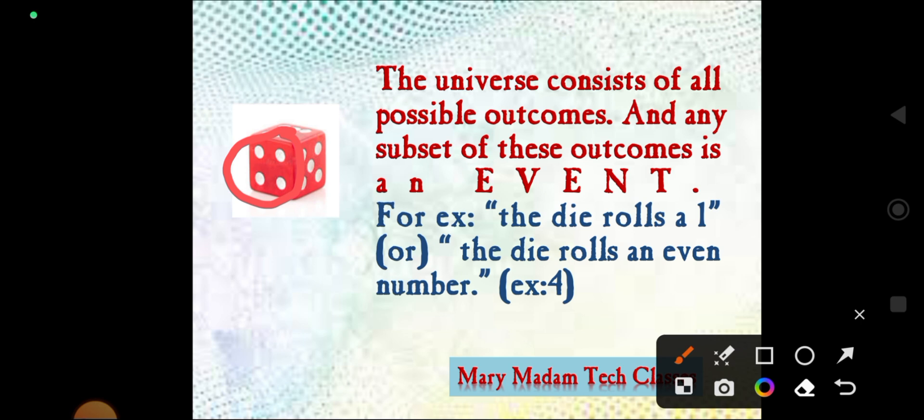If you roll a die, what event will occur? The event could be rolling a 1, or rolling a 4, or rolling a 5. This is the event that occurs when we roll a die.